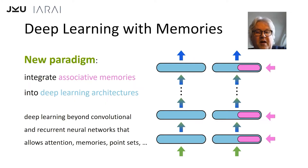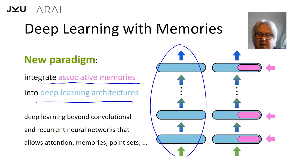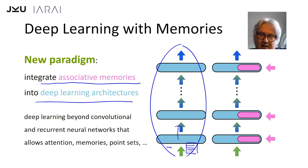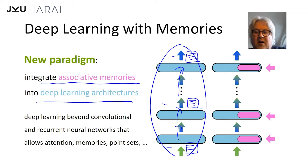Thank you for joining my talk on modern Hopfield networks. Modern Hopfield networks introduce a new paradigm: we want to integrate associative memories into deep learning architectures. This is a standard deep learning architecture — you have a vector, or a set of vectors, then you propagate this set of vectors, you get a vector or a set of vectors here, you propagate it through the deep neural network and get a set of vectors or a single vector. The set of vectors can be summarized at the output layer, or you have an output vector. That's a standard deep learning idea.